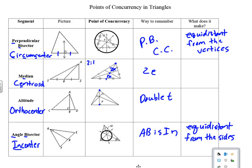PB, CC, PB, CC, 2E, double T, AB is in. 2E, double T, AB is in.